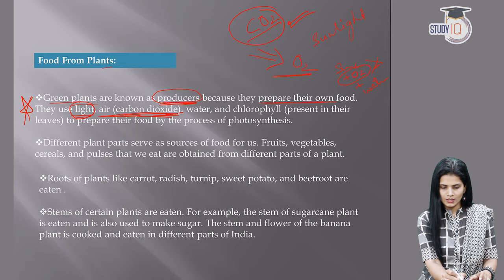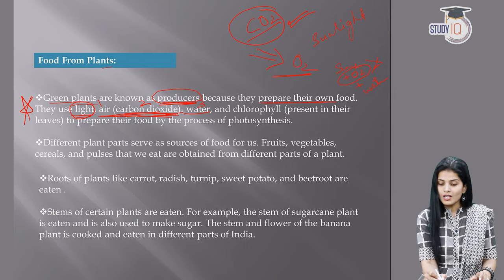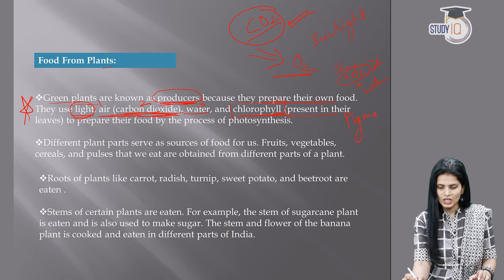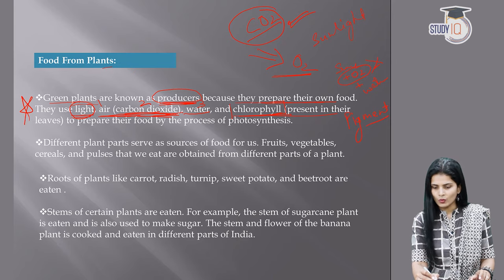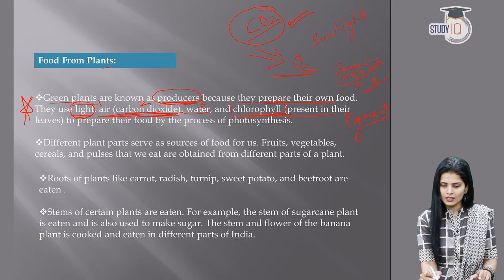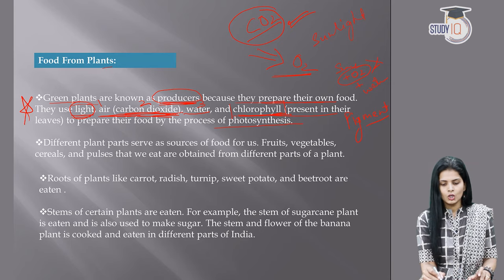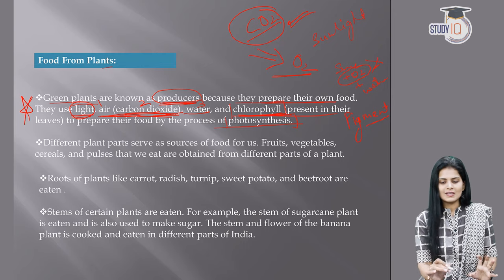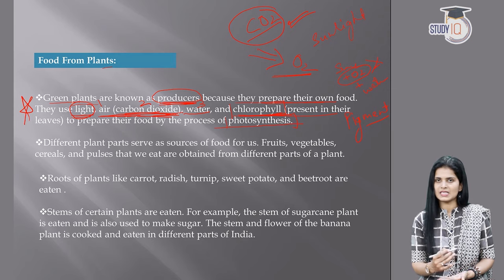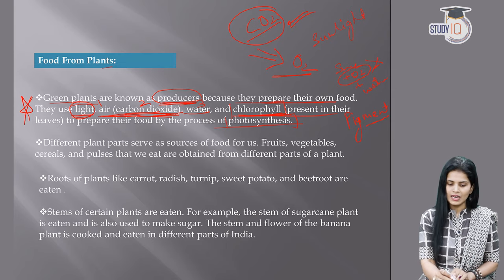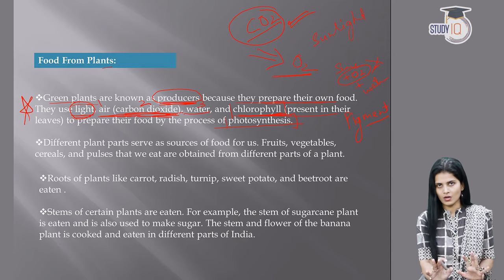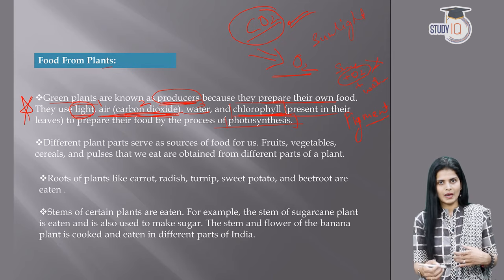Plants need: light, carbon dioxide, and water. The pigment used is chlorophyll. Chlorophyll is a green-colored pigment found in plants that provides the green color. This green pigment helps plants prepare food through the process of photosynthesis. The entire process — carbon dioxide + water + light, in the presence of chlorophyll — is called photosynthesis. Carbon dioxide is used; oxygen is released as a byproduct.